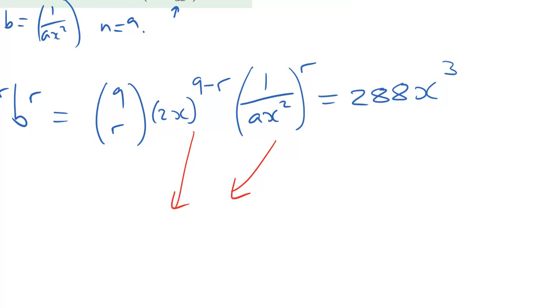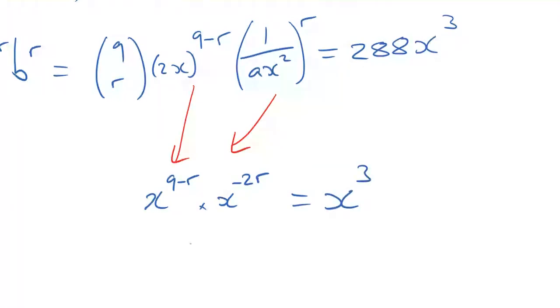So on the left, we're going to end up with like an x to the 9 minus r. And on the right hand term, we're going to end up with an x to the power of minus 2r. Minus sign's coming from the fact that it's on the denominator. Okay. And we're multiplying those powers together to get the 2r. So that has to give us an x to the power of 3. So that means that 9 minus r minus 2r must be equal to 3.